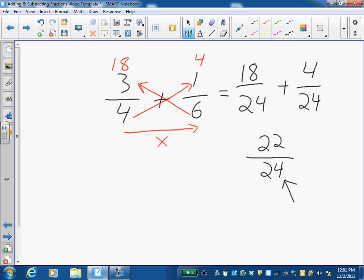The only question is can I simplify this fraction? Both numbers are even because they both end in an even number, so I can divide them both by two. Twenty-two divided by two is eleven, twenty-four divided by two is twelve. That fraction is as simple as it can go because eleven is a prime number and eleven can't go into twelve evenly.